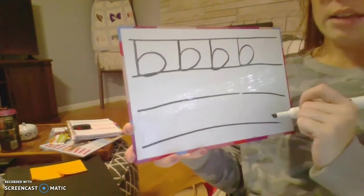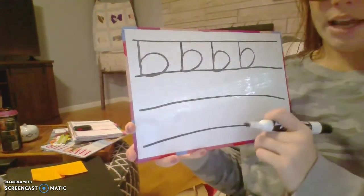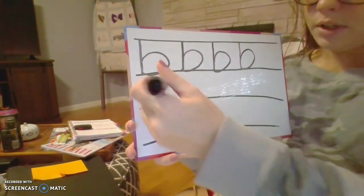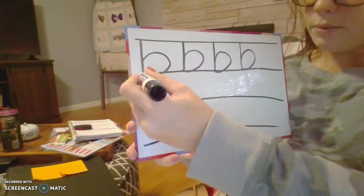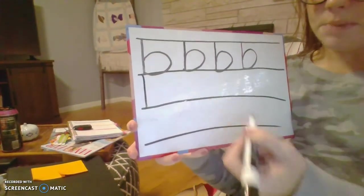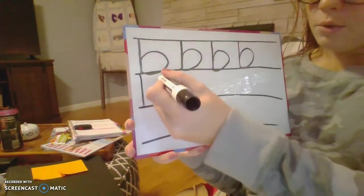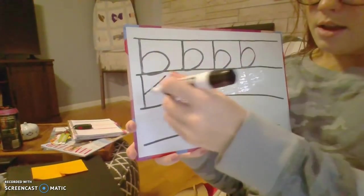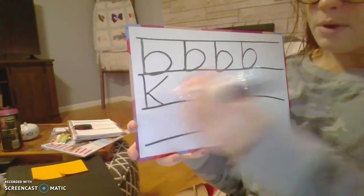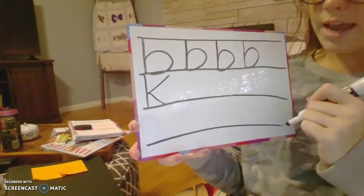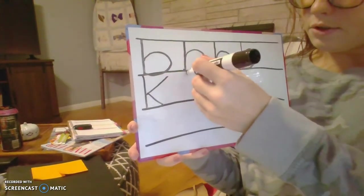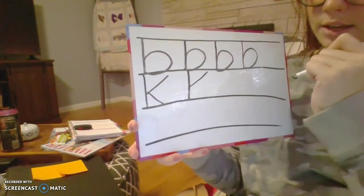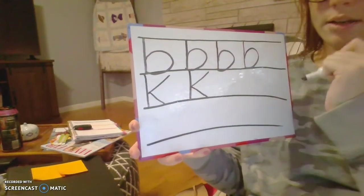Now we're going to write the letter K. We're going to use our lines again, going from the top line to the bottom line. Make a straight stick down all the way from top to bottom. Then we're going to make a diagonal line in that connects to that straight line, and a diagonal line out that connects to the bottom. That is the letter K. We're going to write it four times — straight line down, come in diagonal and connect to that straight line, then come back out and go down.